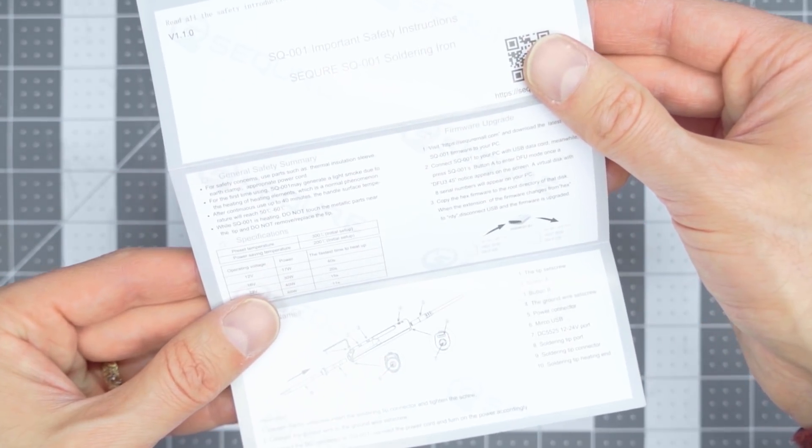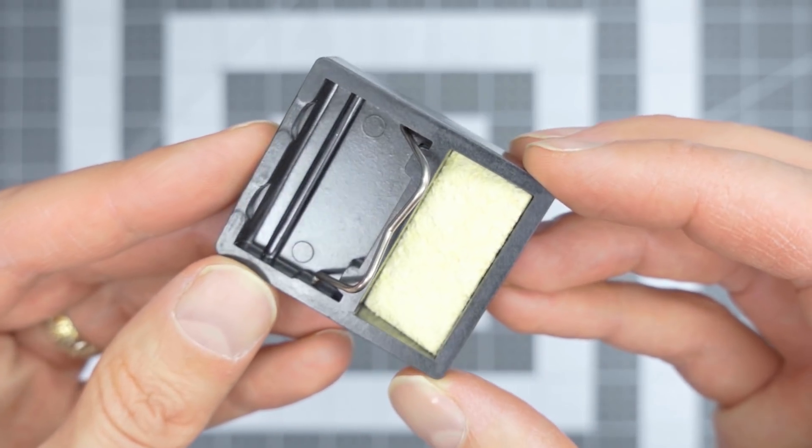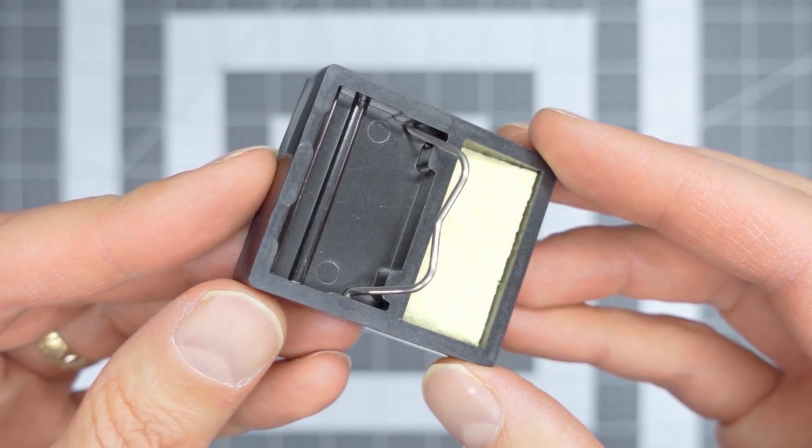You do get an instruction sheet, a little miniature holder with a sponge there. You wet that and then you can clean your tip on that.